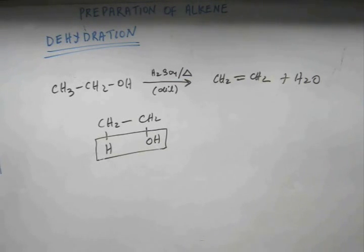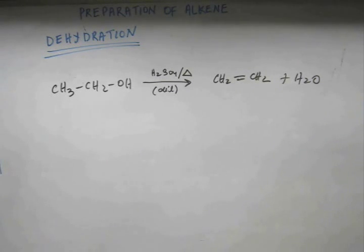So what you have to start learning quickly is the product of dehydration would be alkene, and the reactant on which the dehydration would occur would be alcohol. Now let's talk about the reagent.